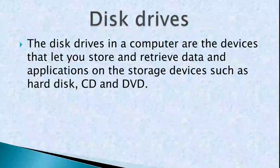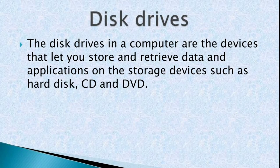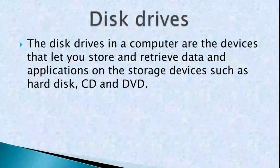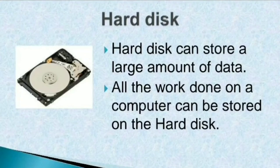Next is Disk Drives. Disk drives in a computer are the devices that let you store and retrieve data and applications on storage devices such as hard disk, CD, and DVD. Let's discuss different types of disk drives. The Hard Disk can store a large amount of data and all the work done on a computer can be stored on it. It is the main storage device found inside a computer, consisting of a spindle of magnetic disks called platters that record and store information.